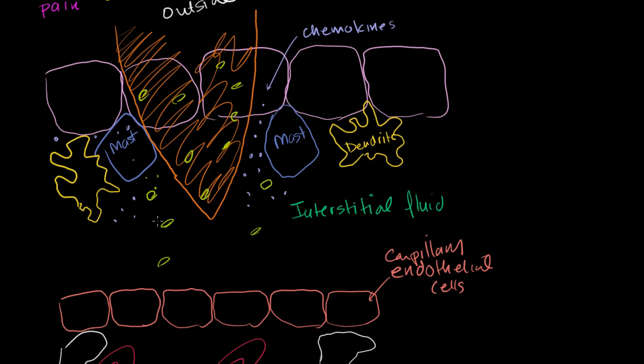These bacteria are also releasing different byproducts as they enter the body. Any of the above can activate the mast cells. And mast cells release histamine. So the mast cells release histamine.